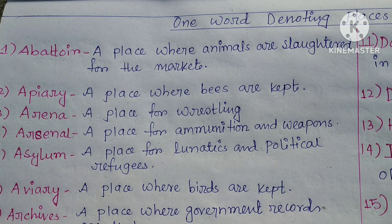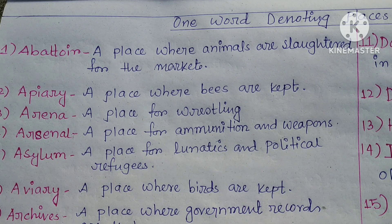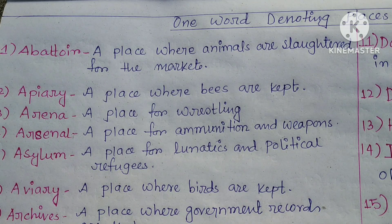Let's start. First of all — abattoir. Abattoir is a place where animals are slaughtered for the market — the place from where we buy meat.